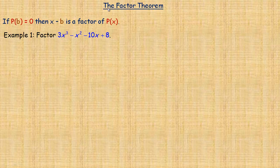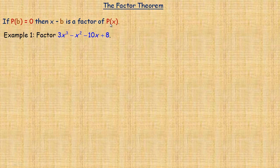In this video we are going to take a look at the factor theorem and how it can be used to factor polynomials. This is the factor theorem: if p of b equals 0, then x minus b is a factor of the polynomial p of x.